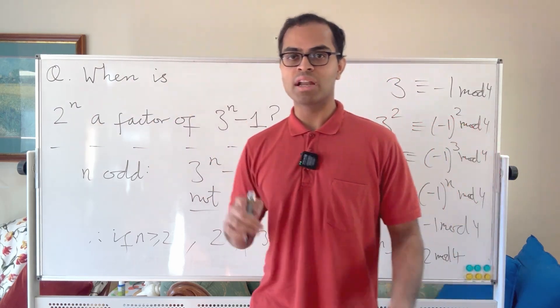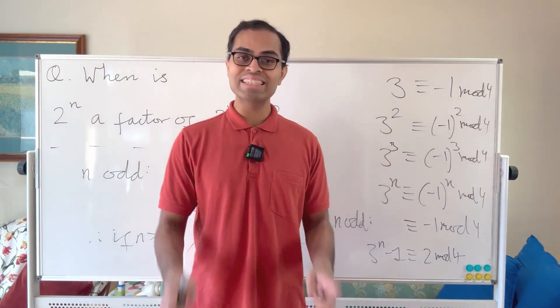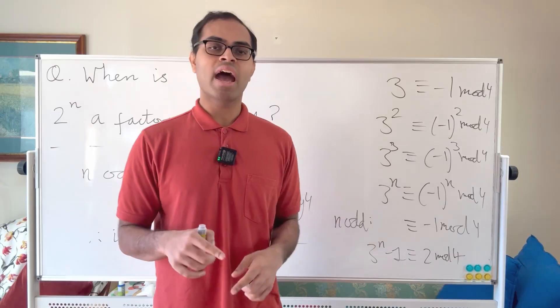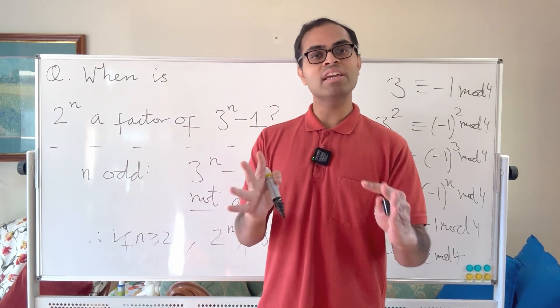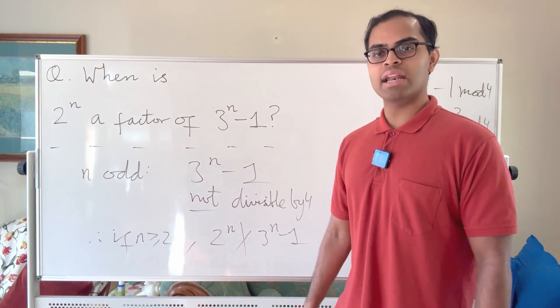We've ruled out all odd values of n greater than 1 for 2^n being a factor of 3^n − 1. The next case — even n — is going to be very beautiful, and we'll use a very cool trick.